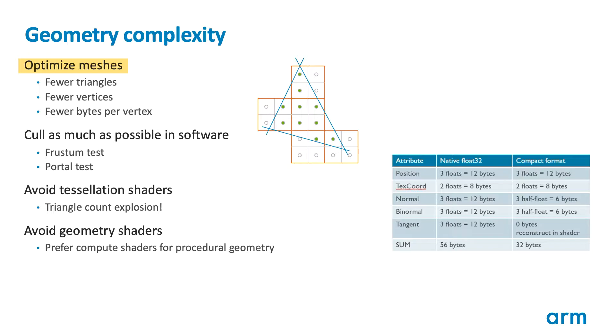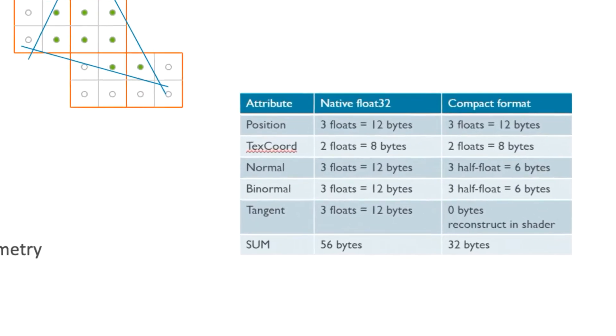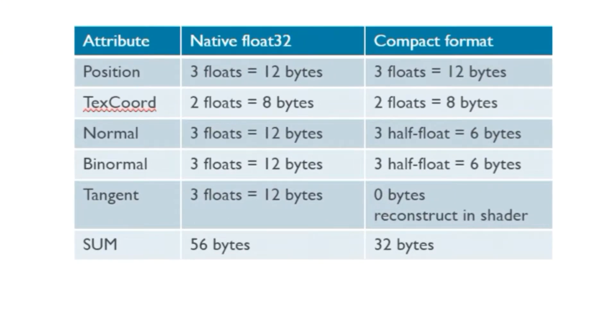The final task for the initial encoding review is to check the data format and precision of the input and output vertex attributes. We see a lot of content using 32-bit floats for all input attributes, but this is rarely needed and can rapidly consume bandwidth. In the table shown here, you can see that the size of a vertex can be almost halved by using narrower types such as float 16.